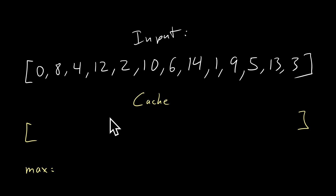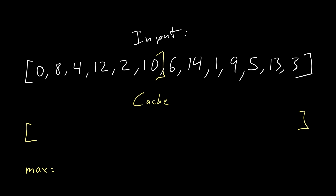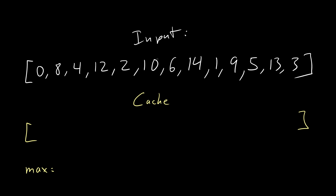Don't look at the cache for now — this is kind of a hint, but don't look at this for now. Just look at the input array. Imagine if my array was this size. At the end, I want to know the size of the subsequence — what is the longest subsequence here that, at the end of the subsequence, is smaller than my number? If that's the case, then the longest subsequence here, plus one, which is myself — if that makes any sense.